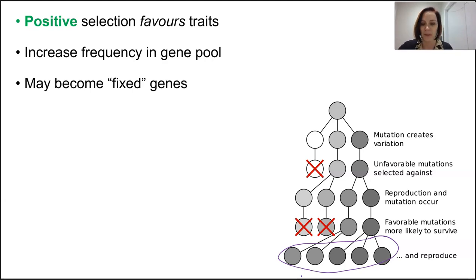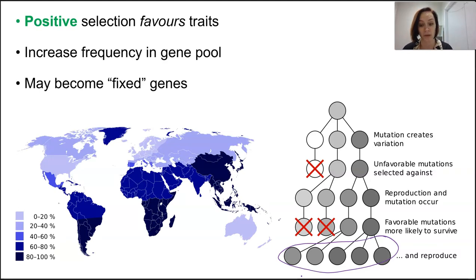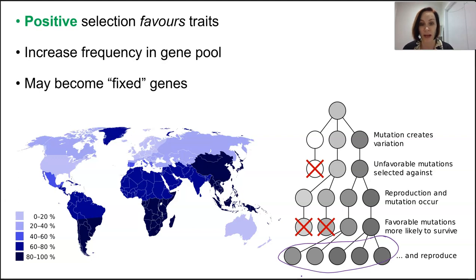A human example of positive selection is the persistence of the lactase gene, which produces the enzyme to digest dairy. Previously it was thought to stop being produced after childhood, but it's now prevalent amongst many adult populations around the world. It's thought this emerged around the time that dairy farming began in northern Europe, and that's what your sample IA3 is on.